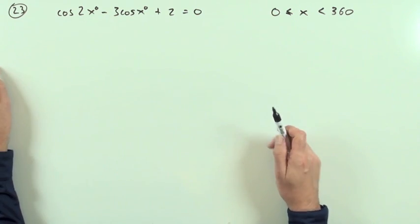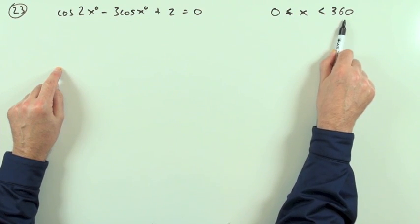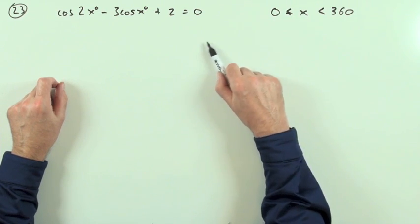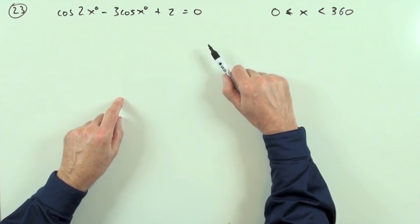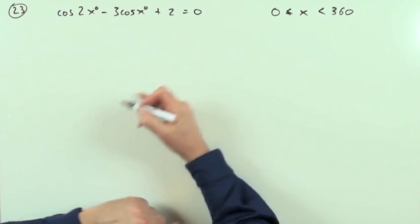Notice that it says x degrees, and x itself is just a number. So if I was to write an answer, it would be x equals just a number, not x equals the number degrees, because then it would be x equals some number degrees degrees. It's a pest.